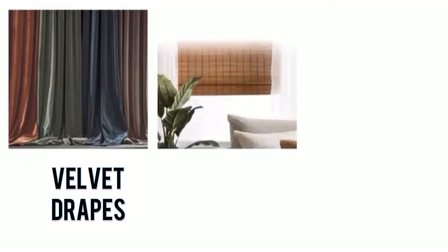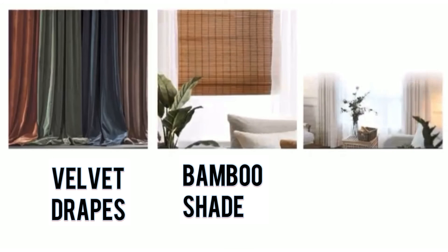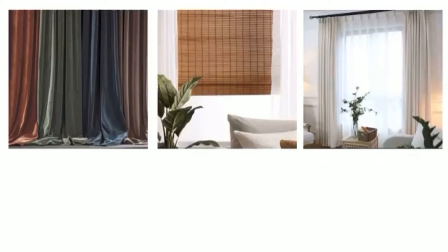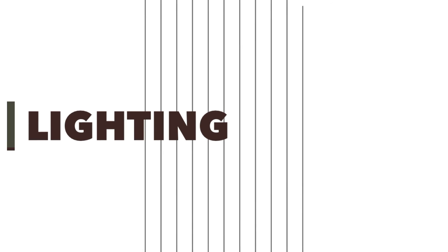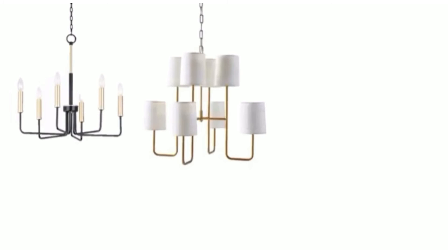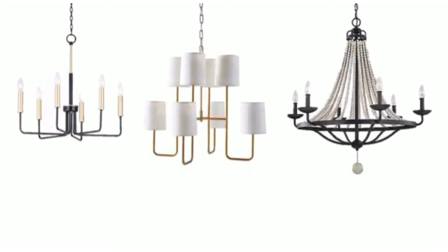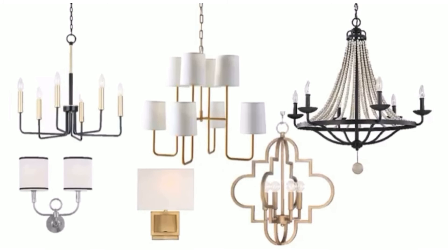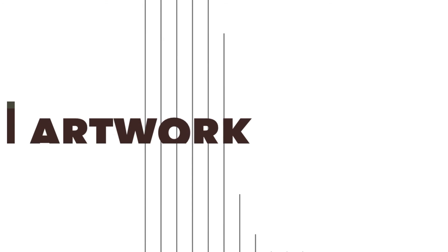You definitely want to use window coverings. Simply use velvet drapes, bamboo shades, or cotton drapes with a pinch pleat. Look for lighting fixtures that have strong, clean, and classic lines. Mini lampshade chandeliers and crystal chandeliers involve some traditional-contemporary mixture of light fixtures.